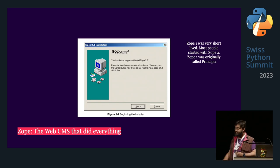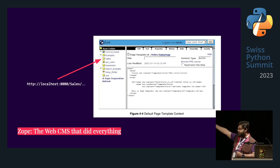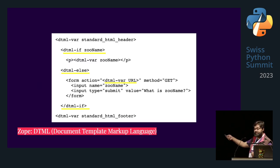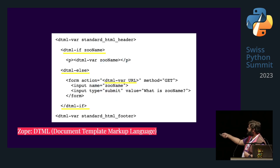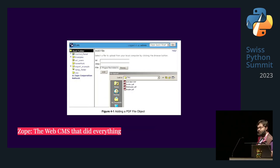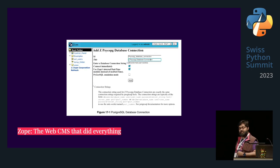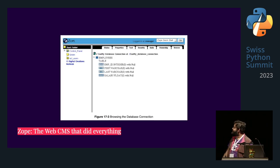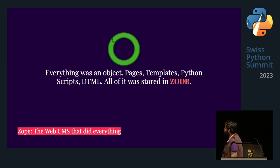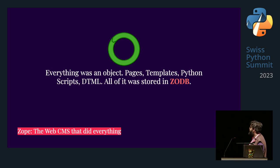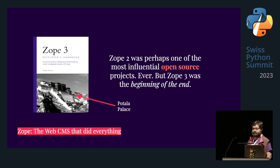You would actually have an installer for Zope — yes, this is Windows 95. This is what the interface looked like. They even had templating languages with if statements and else statements and VARs. You could even upload newfangled things like PDFs, and you had connections to relational databases. Zope is called Zope because of the Zed Object Publishing Environment, because everything was an object. Pages, templates, Python scripts, DTML — all of it was stored in ZODB. And that eventually became a problem.